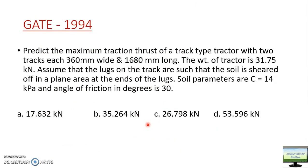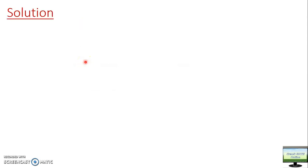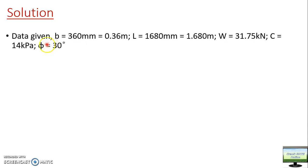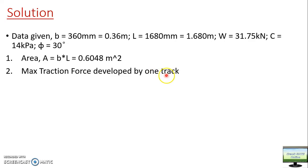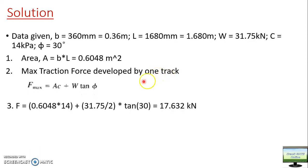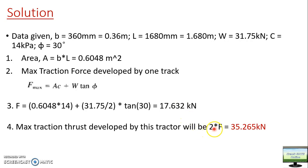Moving forward, this is a 1994 exam question. Pause the video and try to solve it. They have given the size of the track, the angle of internal friction, and the soil cohesion. Here is how to solve it: first, it is a track, so area will be B into L. Then for maximum traction force developed by one track — since the weight is supported by both tracks, you take half the weight, W by 2, for one track. So you calculate F for one track using that W by 2. For the complete tractor, the total traction will be 2F. The answer will be 35.265. So option B is the right answer.